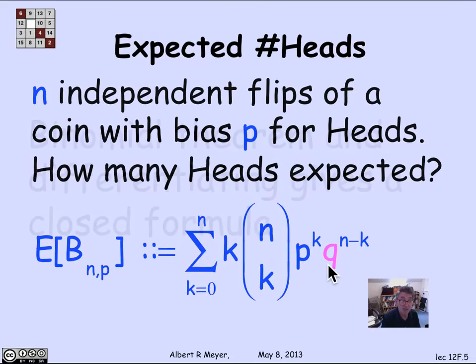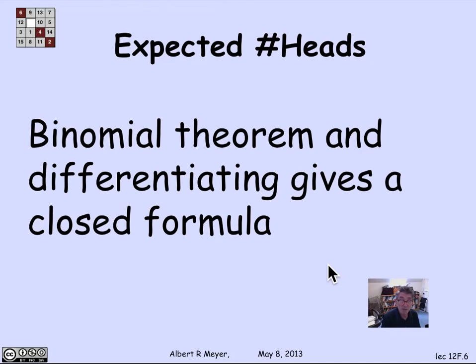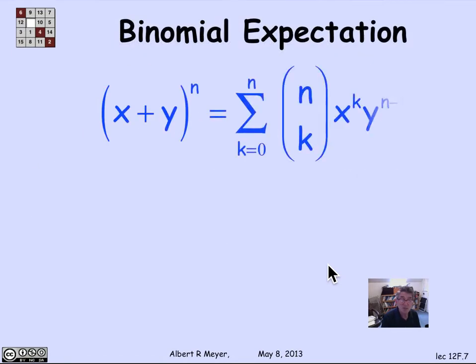So let's remember the binomial theorem says that the nth power of (x+y) is the sum from k equals 0 to n of (n choose k) x^k y^(n-k).